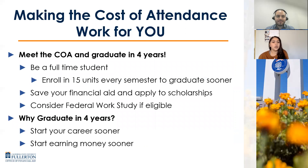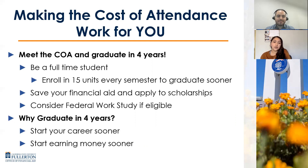Make the cost of attendance work for you and graduate in four years. If you're on 15 units every semester, you'll be able to graduate sooner. Save your financial aid, apply for scholarships, and consider Federal Work Study if eligible. Why graduate in four years? You get to start your career sooner, start earning income sooner, and begin building your professional life faster.